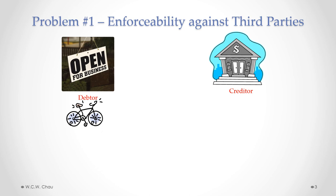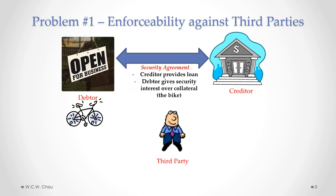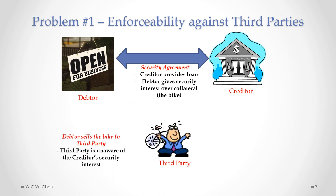So if we have a debtor and a creditor and the collateral is this bicycle, let's say we have a security agreement between the debtor and the creditor. The creditor has provided a loan to the debtor, and the debtor has given a security interest over the bike — let's say it's a chattel mortgage. And here's a third party, and let's say the debtor sells the bike to the third party.